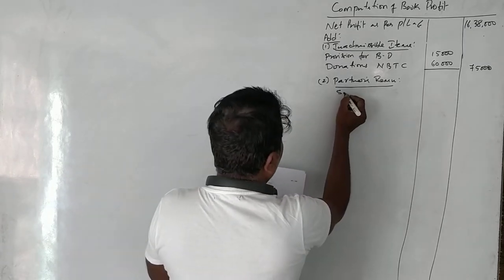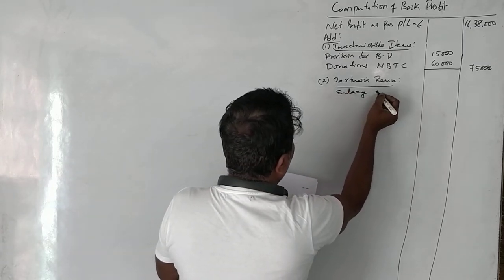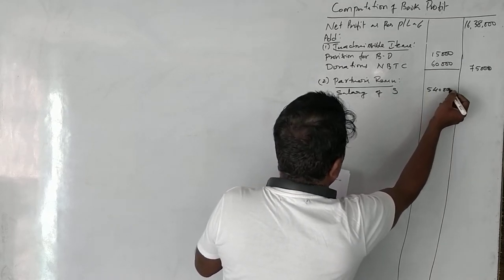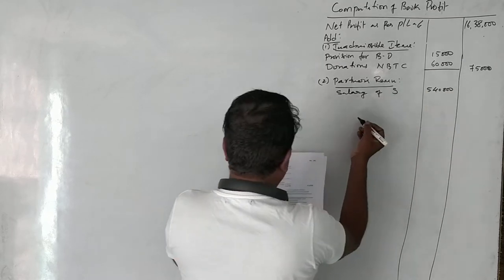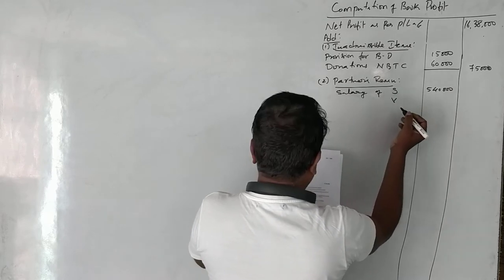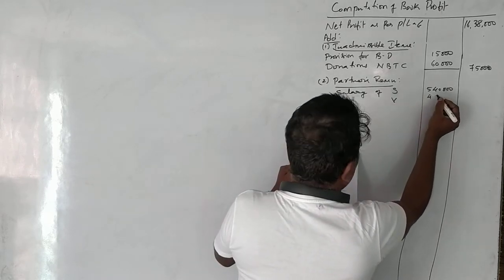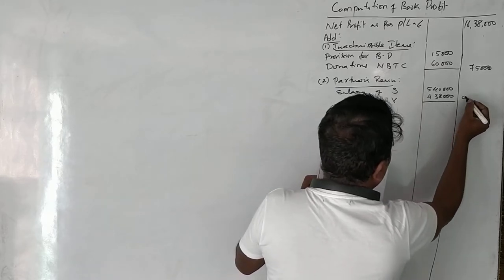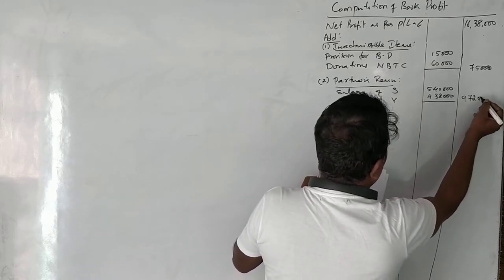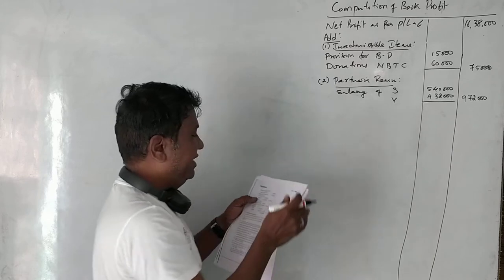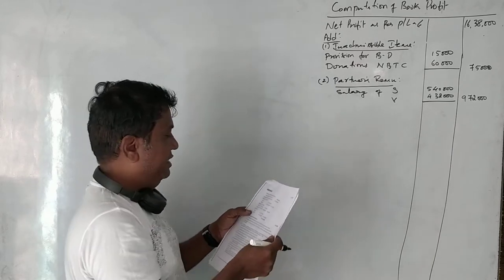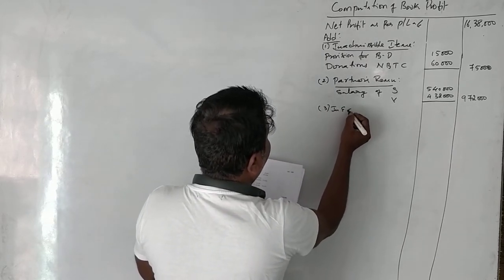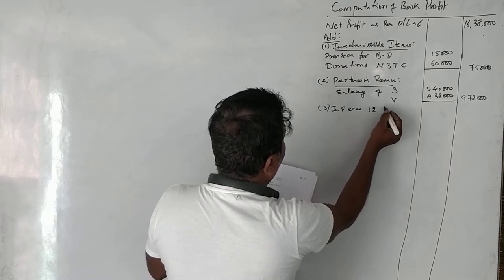The second item to add back is partners' remuneration. Salary given to partners: Sean ₹5,40,000 and Venkat ₹4,32,000, totalling ₹9,72,000 to be added to net profit.